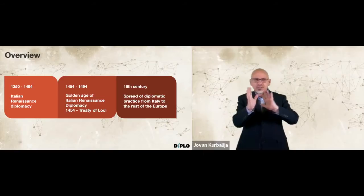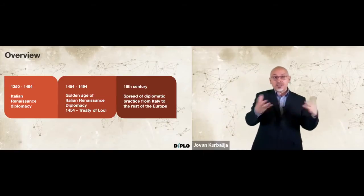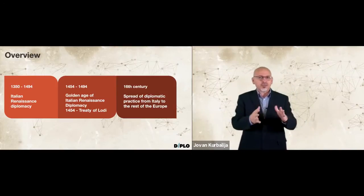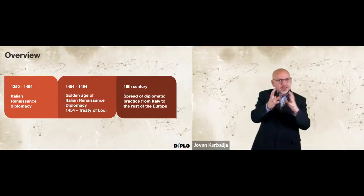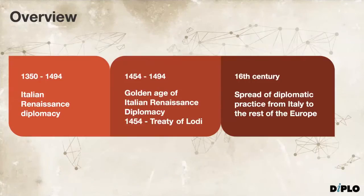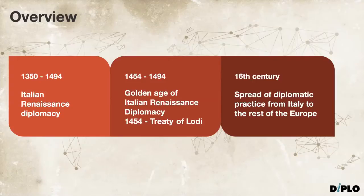This period, which lasted between 1350 and 1494 when Italy was invaded by France and gradually came under strong foreign influence — notably later by the Habsburgs — this interregnum period is a period of flourishing Renaissance diplomacy. The golden age of Italian Renaissance diplomacy started in 1455 with the Treaty of Lodi, which was a peace agreement signed between Milan, Naples, and Florence. It put an end to the wars between Milan and Venice, and the Treaty of Lodi codified the system of Italian diplomacy among city-states. This period marked the first long peaceful period after centuries of wars among the Italian city-states, and it lasted until 1494 when Italy was invaded by France.